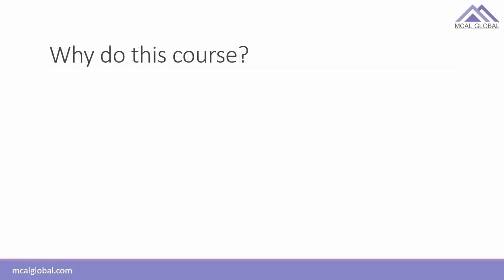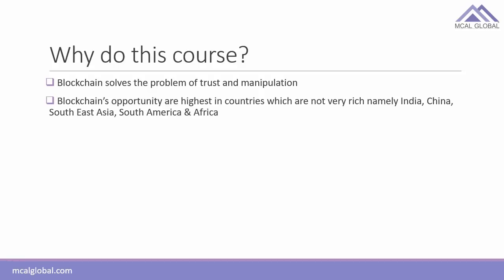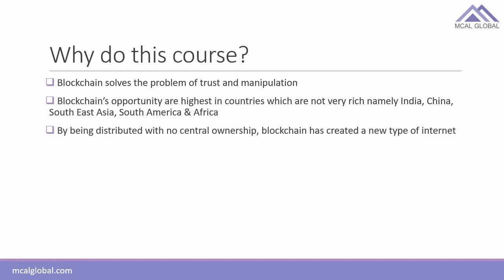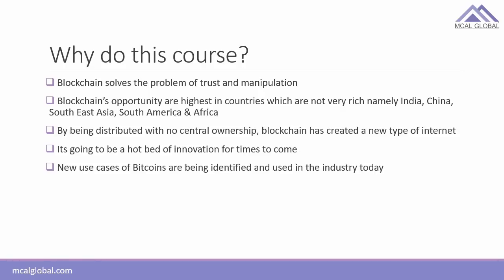Why do this course? Blockchain solves the problem of trust and manipulation in society — it's a very big idea. Blockchain's opportunities are highest in countries that are not very rich, namely India, China, Southeast Asia, South America, and Africa. By being distributed with no central ownership, blockchain has created a new type of internet and is going to be a hotbed of innovation for times to come. New use cases of Bitcoin are being identified and used in the industry today. Join this course to understand blockchain's true potential.